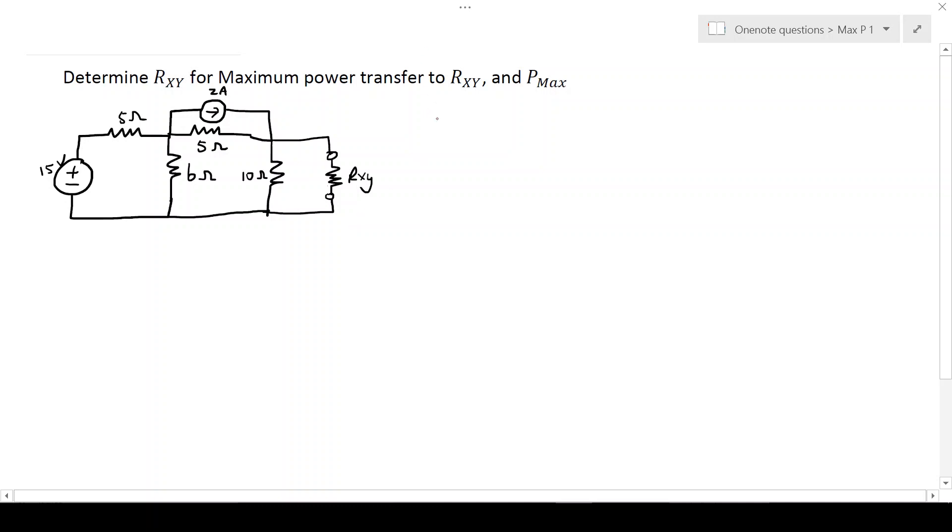We know from the theory of this section that for maximum power transfer to Rxy, Rxy must equal Rth. And we know that the actual value of the maximum transfer must be Vth squared over 4Rth.